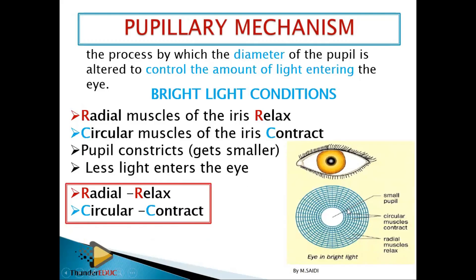The circular muscles are called circular because they are arranged in circles, while the radial muscles are like a radius. When the radial muscles relax, the circular muscles contract. When they contract, the diameter of the pupil decreases, and then less light enters the eye — it pushes inward so that the hole is small and less light enters.